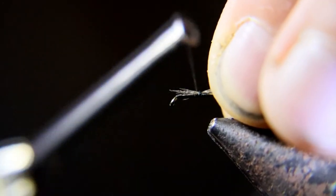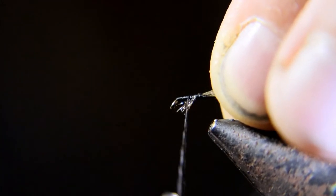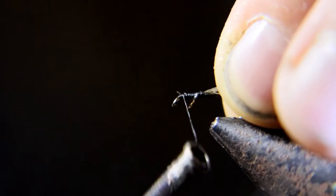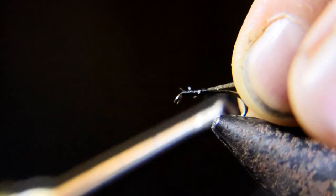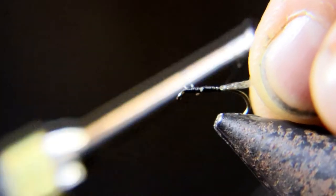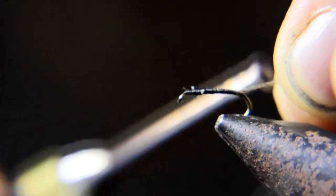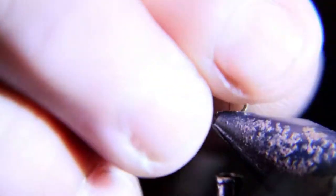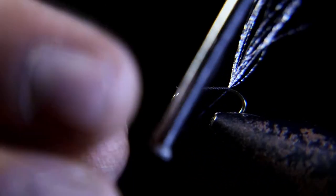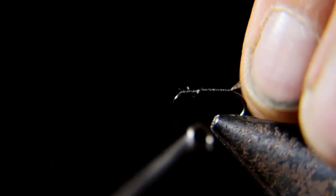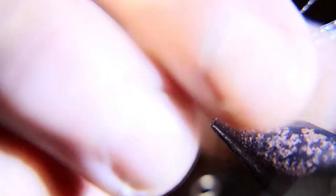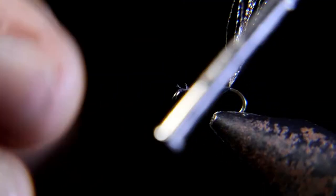Now you're gonna tie this in for the tail, and for length I usually go double the length of this shank of the hook. I'll put a couple wraps underneath the tail to make it stick up a little bit.